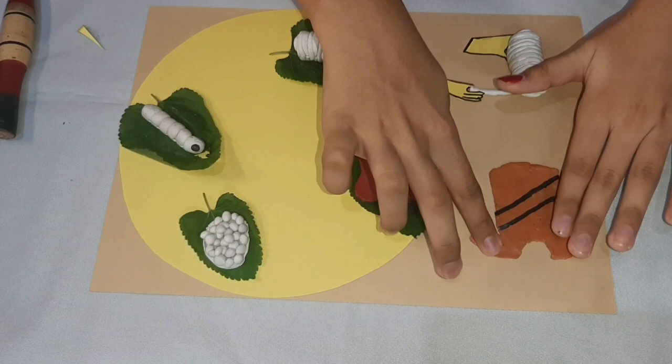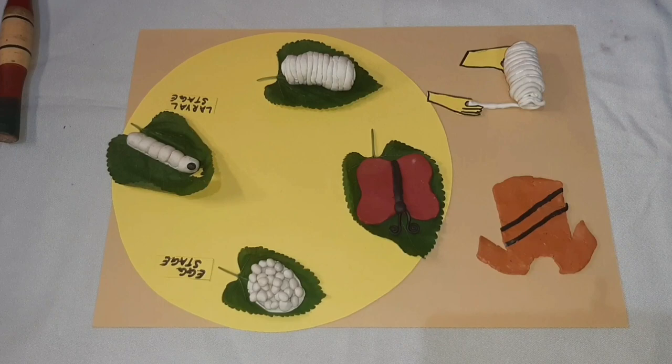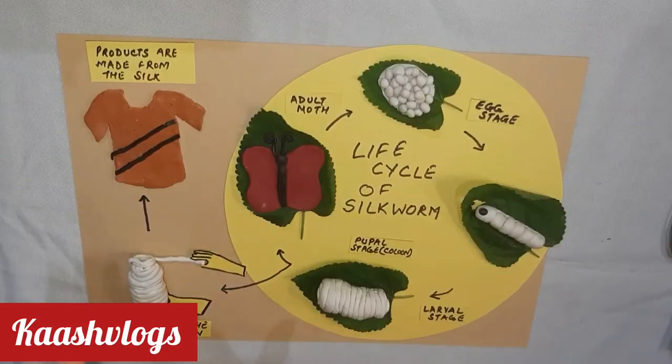Now we have to label it: egg stage, larval stage, pupa stage or cocoon, adult moth, unraveling of silk cocoon, and products made from silk.